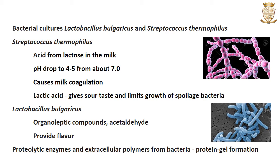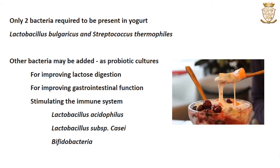The proteolytic enzymes and extracellular polymers from Lactobacillus bulgaricus and Streptococcus thermophilus growth also aid in the protein gel formation. Sometimes other bacterial cultures such as Lactobacillus acidophilus, Lactobacillus subspecies caseae, and Bifidobacteria may be added as a probiotic culture to improve lactose digestion, improve gastrointestinal function, and also to stimulate the immune system.